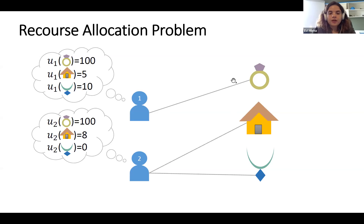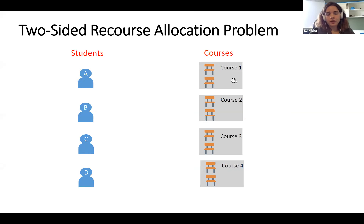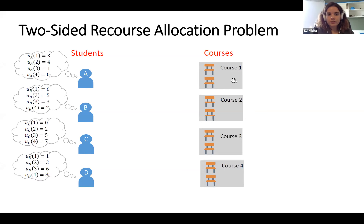While this model is quite general, we consider scenarios it cannot capture. Consider students and courses: each course has a capacity equal to available seats, and students have preferences over courses. An allocation can be EF1 with respect to students. However, behind each course there is a teacher, and we can view this as a matching from students to teachers, where teachers also have preferences over students.